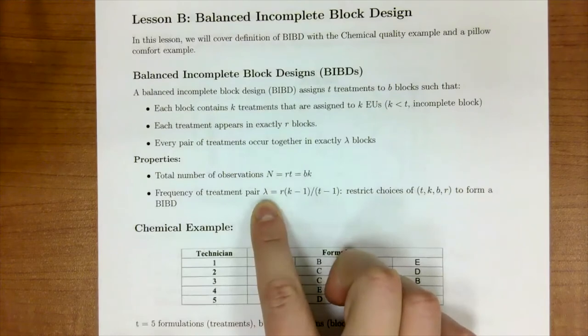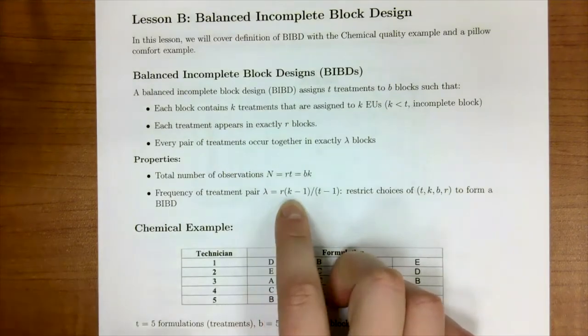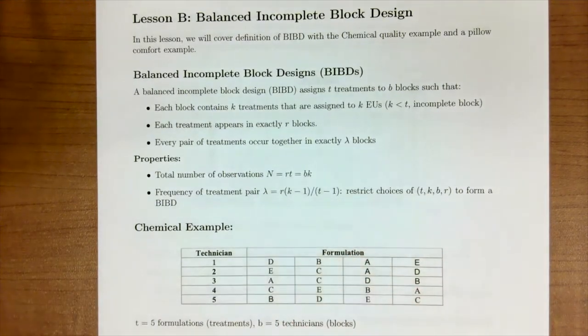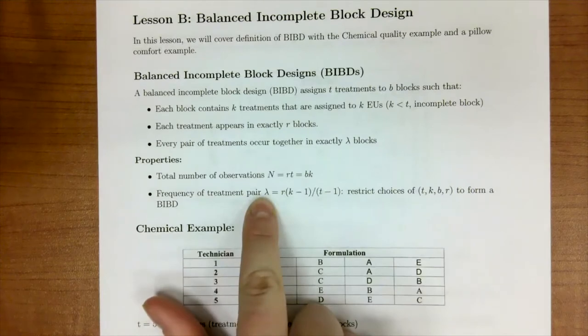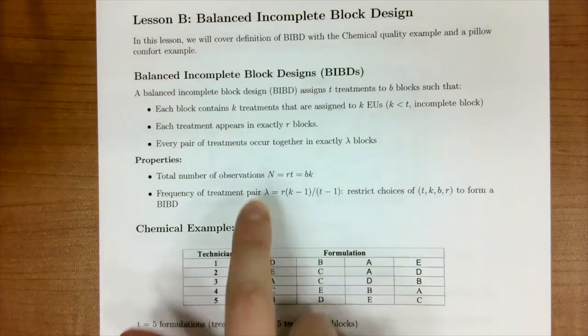Our lambda though, let's say I gave you r, k, and t, and I asked you to figure out what the frequency of treatment pairs was. If lambda comes back as something that's not an integer, then this isn't going to be a BIBD.